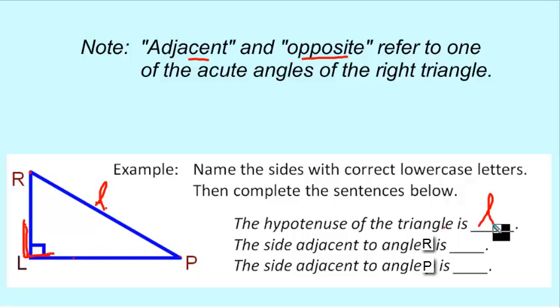It's cursive if you're wondering what that is. The side adjacent to angle R. Well, all right. Here is angle R. It's made up of this side and this side. Since L is the hypotenuse, that makes this side the adjacent to R. So I'm going to use a lowercase p because it's across from angle P.